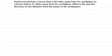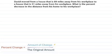We can also do percent decrease, just like things can go up in price or in amount, they can decrease, they can go down. David moved from a house that's 89 miles away from his workplace to a house that's 51 miles away from his workplace. What is the percent decrease in the distance from his home to his workplace? We're still going to use the same formula.